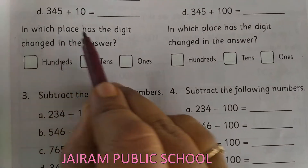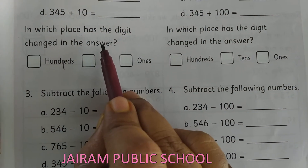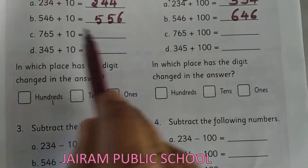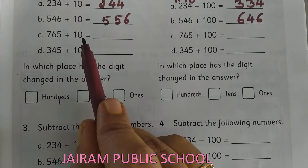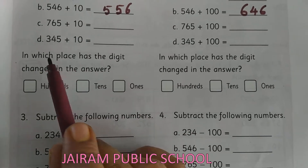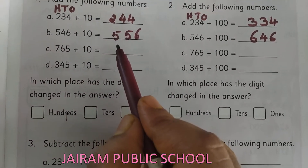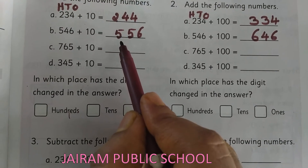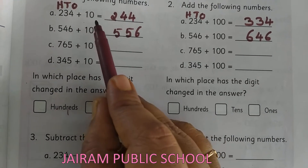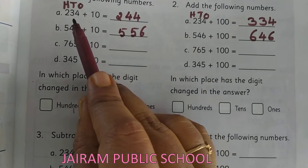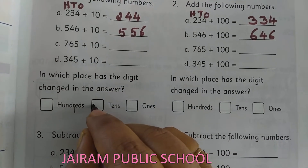See here — in which place has the digit changed in the answer? So this one I gave as home fun in the last session, isn't it? In which place has the digit changed in the answer, Kanna? Yes, very good — 10s place. Because we are adding 10 alone to this number, the answer is changing in the 10s place.